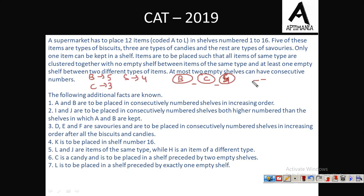Further, some information was given to us. A and B are to be placed in consecutively numbered shelves, so A and B must be items of the same type. And the shell numbers must be in increasing order, so the shell number of B has to be greater than that of A.